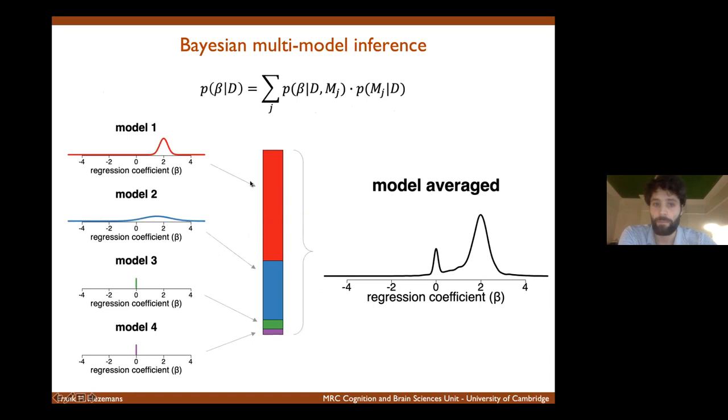And so we can see that model one had the most posterior probability, something like 60%. But we also can't exclude these other models. And you see that the model average posterior distribution is a combination of all of these four distributions, which is in this case primarily made up of model one, but also a little bit from the other models.